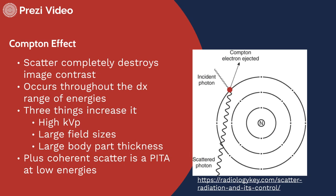Another thing that contributes to an increase in scatter would be a larger field size. So by reducing collimation or increasing the area that we're imaging, we would expect to see an increase in scatter, a decrease in image contrast, an increase in patient dose, as well as a potential increase in occupational dose. And of course, anytime we are imaging a larger patient or a thicker part of the body, we would expect to see scatter radiation increase.